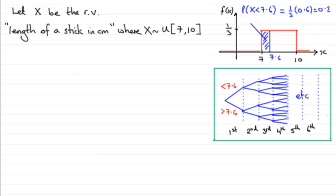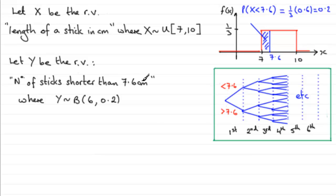So if we define a random variable, say, let Y be the random variable, number of sticks shorter than 7.6 centimeters, where Y is now distributed binomially, we've got six trials, and the probability of a stick being shorter than 7.6 is 0.2.